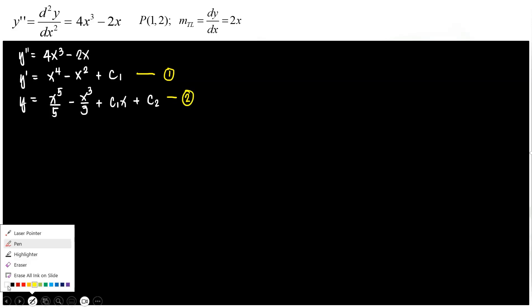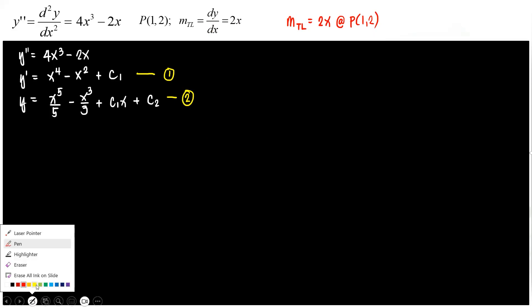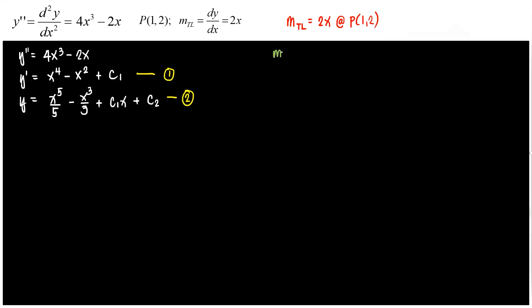So, how many conditions are given to us? Also 2. You're also given two conditions. The slope of the tangent line is equal to 2x at the point 1, 2. You have to take note that the slope of the tangent line is always equal to y prime of the curve. So, where's the y prime? First equation or second equation? First, very good.